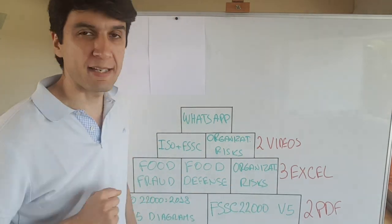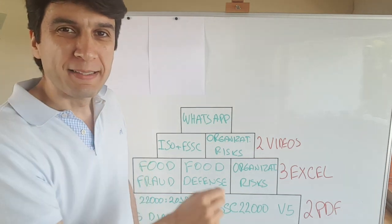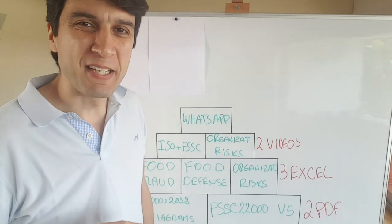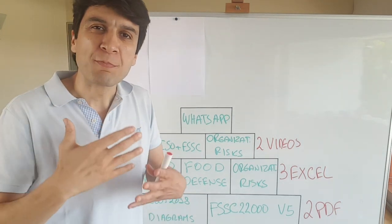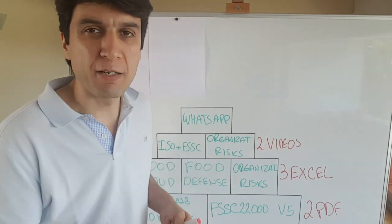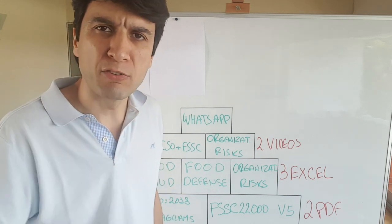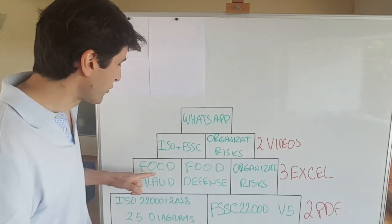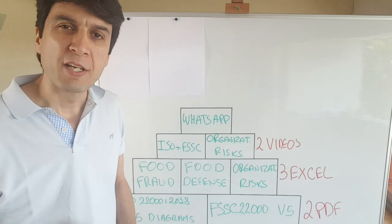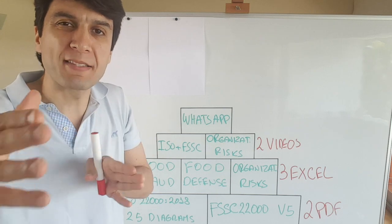Then you have 3 Excel files. These 3 topics may be the most problematic for food safety professionals, because we understand about food safety risks, but these are requirements from food safety management systems that are not directly related with food safety. I'm talking about food fraud, food defense, and organizational risk. So I developed Excel files that can help you implement these step by step.